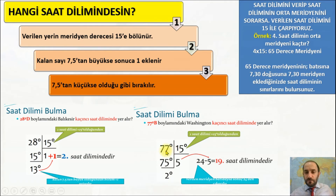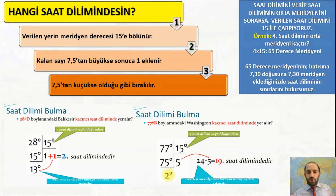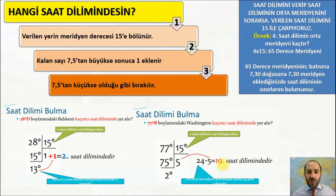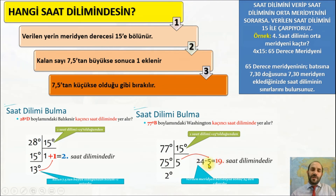77 derece batı boylamının saat dilimini bulalım: 77 ÷ 15 = 5, kalan 2. Kalan 7.5'tan küçük olduğu için 1 eklemiyoruz; bu 5. saat dilimidir. Eğer 24 parçalık dilim olarak isteniyorsa 24 - 5 = 19. saat dilimi olarak buluyorsunuz. Ama doğu-batı olarak 12-12 ayrılmış şekilde isteniyorsa 5 olarak kalır. Kısacası: kalan 7.5'tan küçükse sonucu olduğu gibi alıyorsunuz; 7.5'tan büyükse 1 ekliyorsunuz.